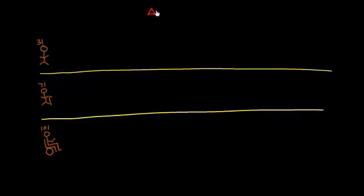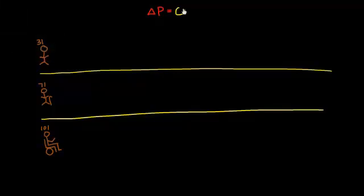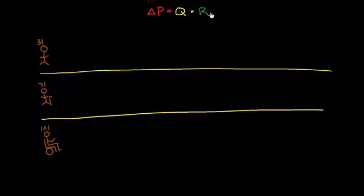We're going to apply the formula we've been talking about so much: δP equals Q times R, where Q is cardiac output and R is resistance.